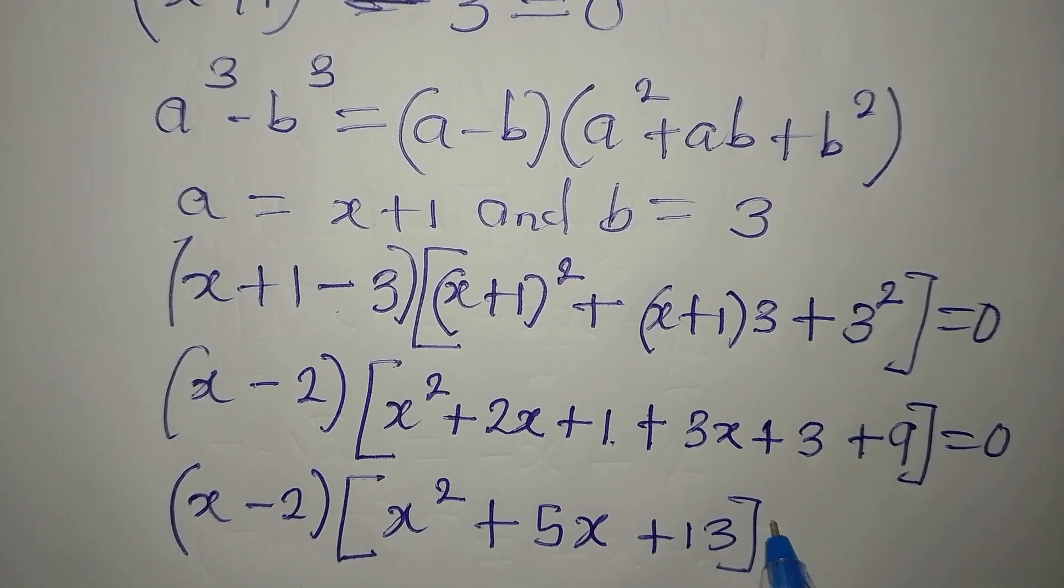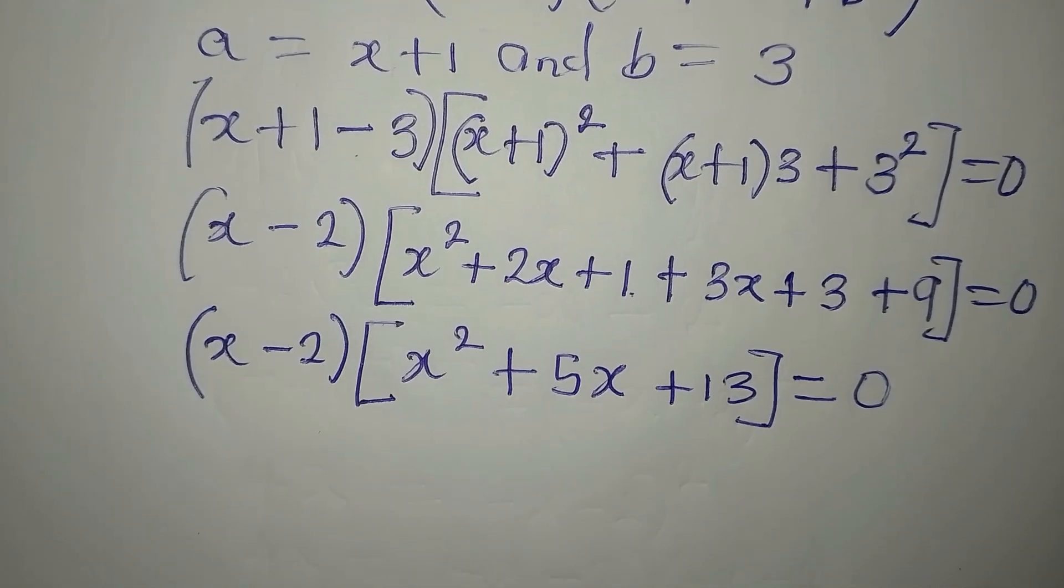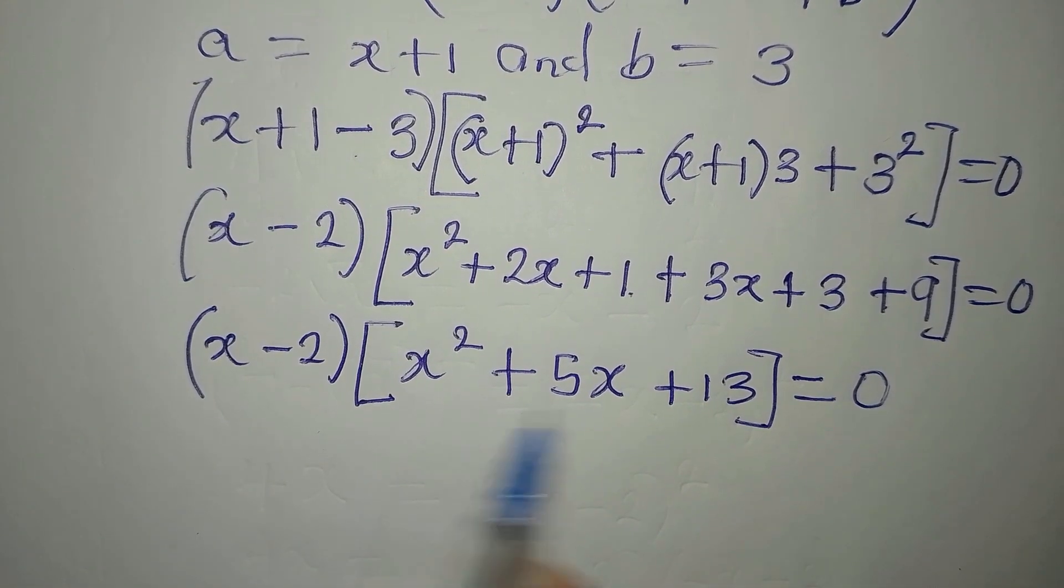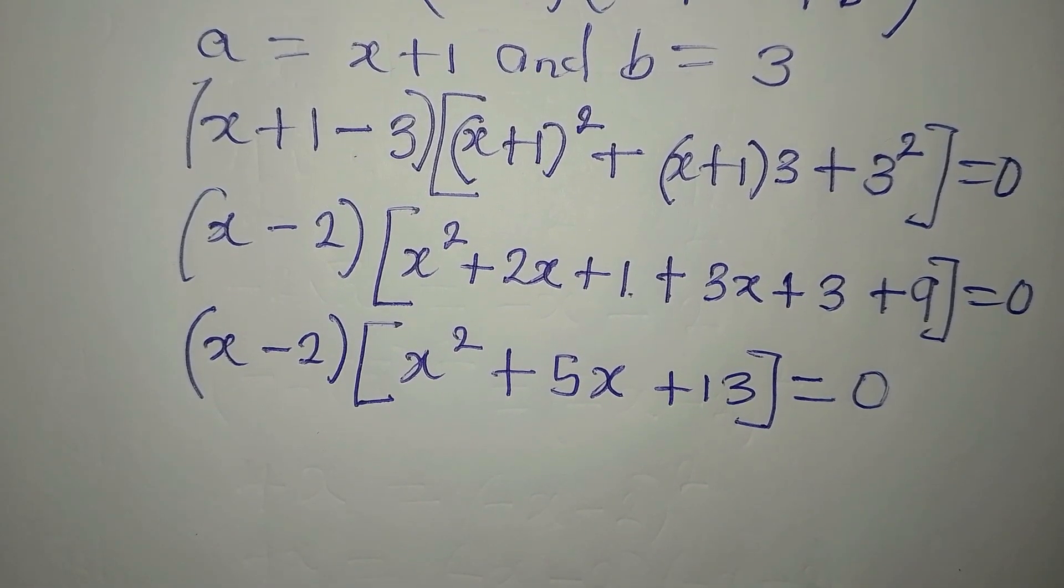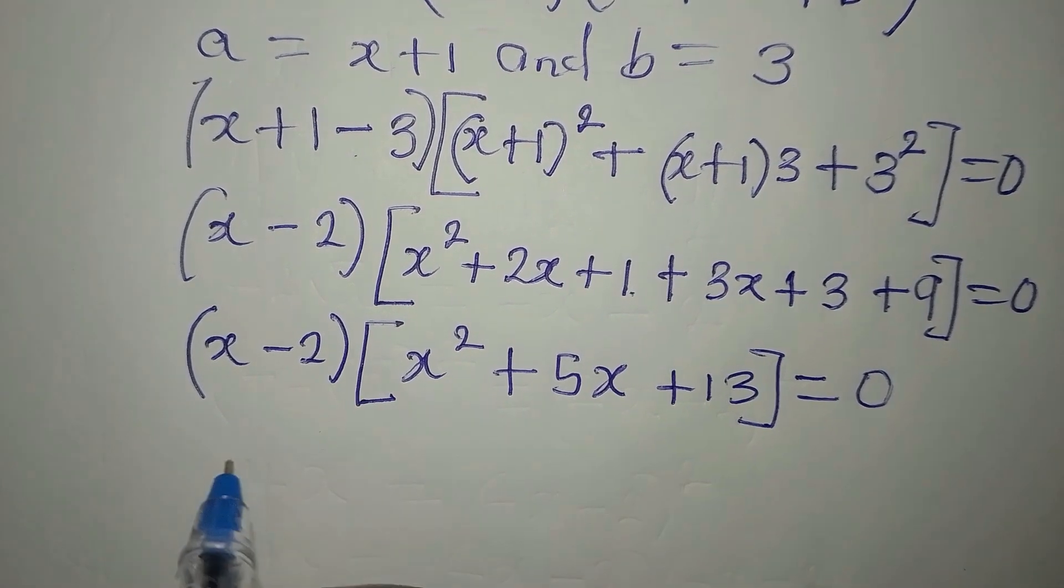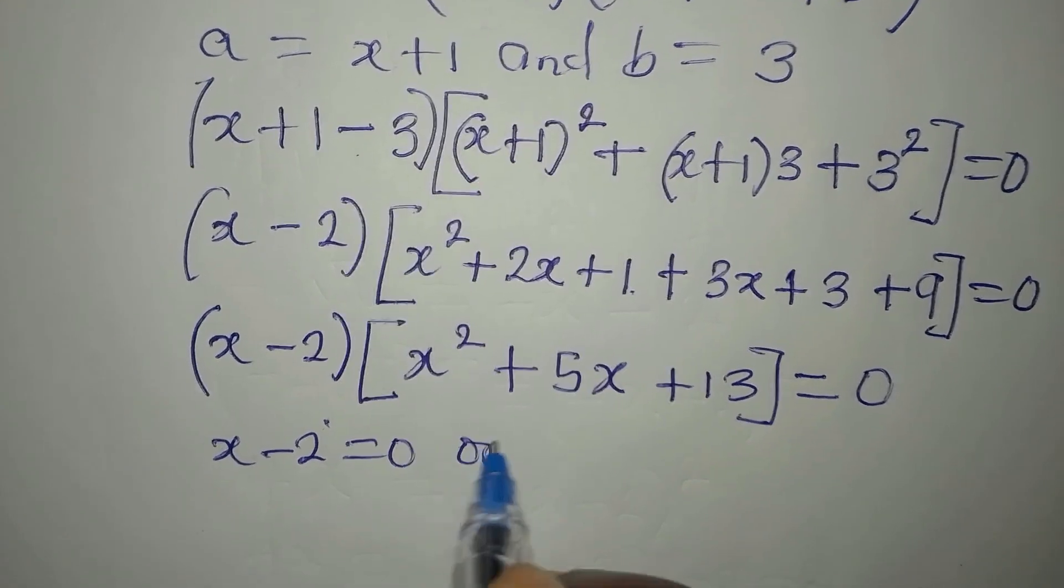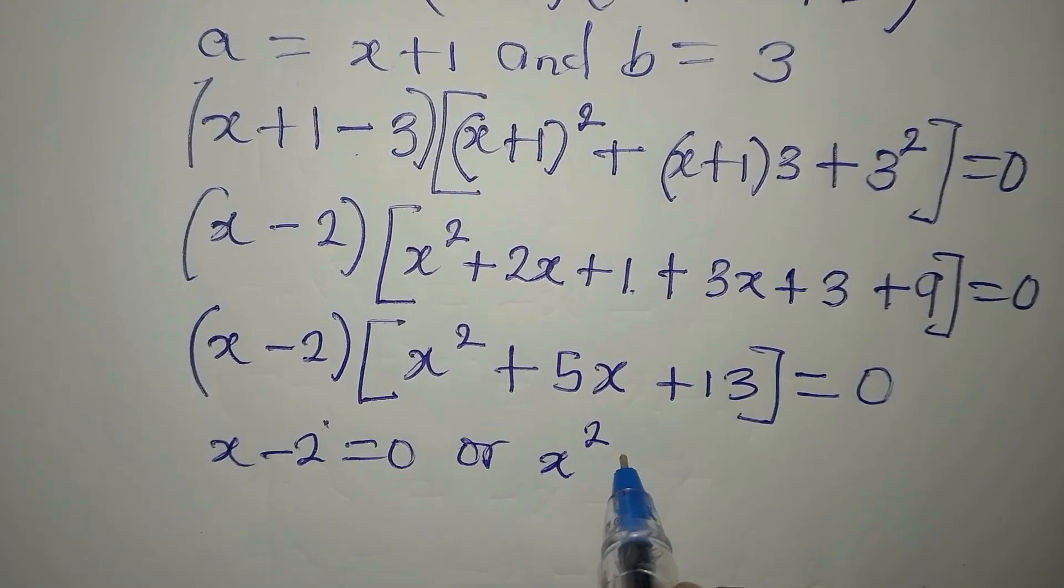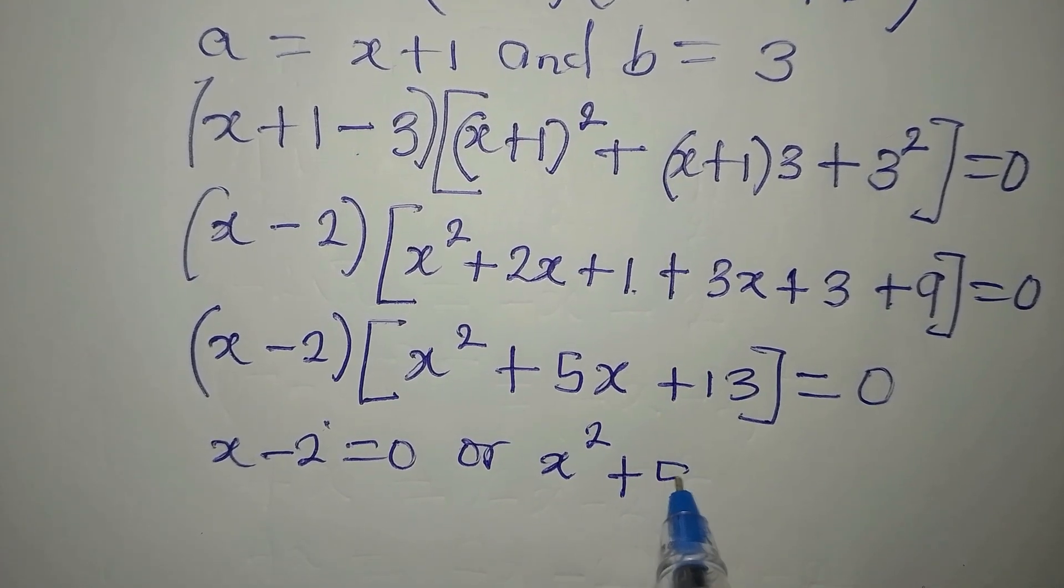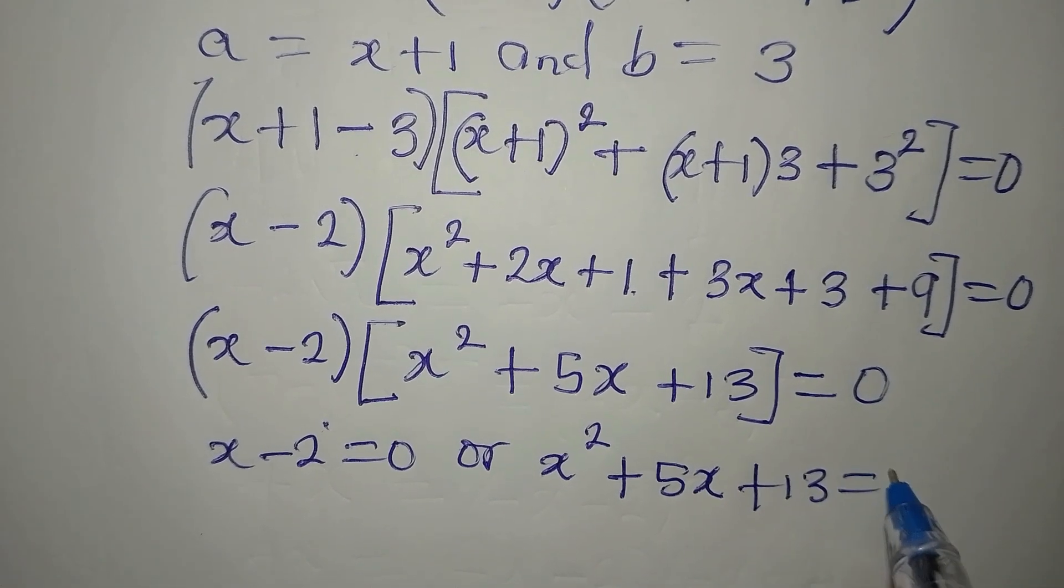We close this and then we equate to 0. Now we have 2 factors multiply to get 0. It means that either of them or both of them is equal to 0. So x minus 2 is equal to 0 or x squared plus 5x plus 13 is equal to 0.